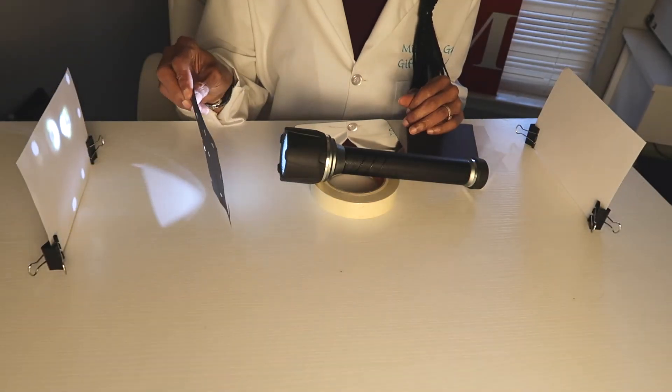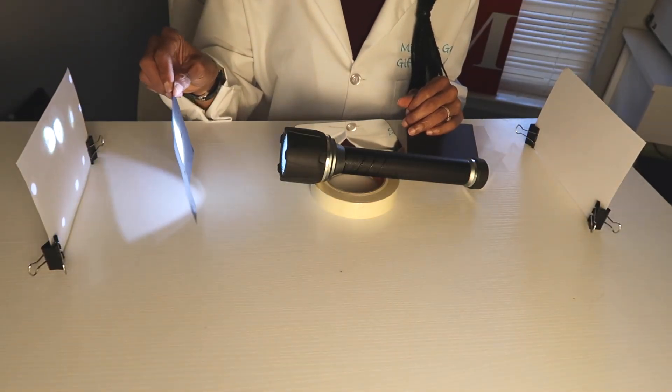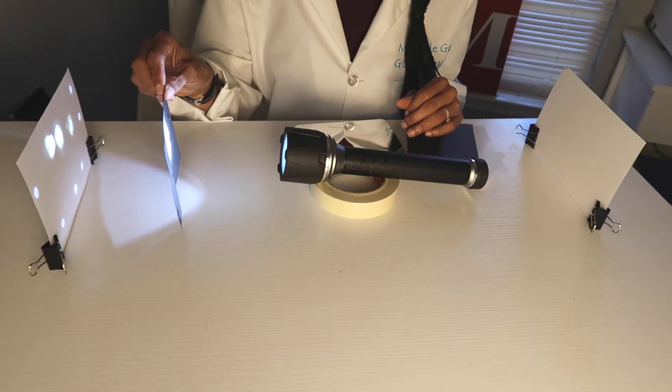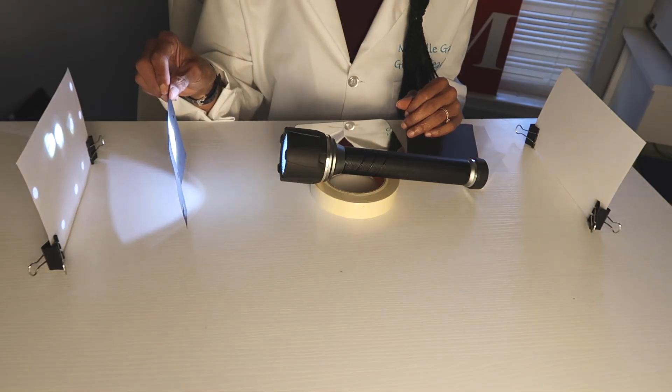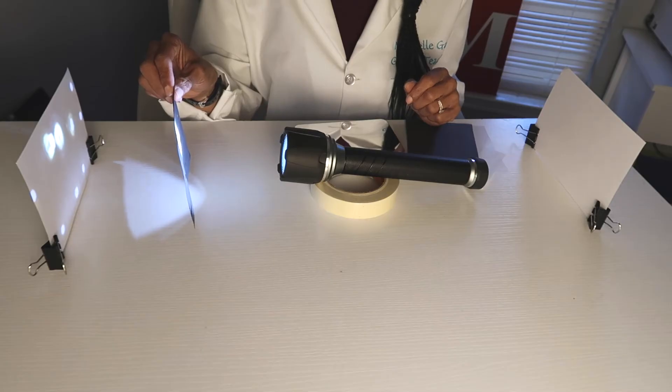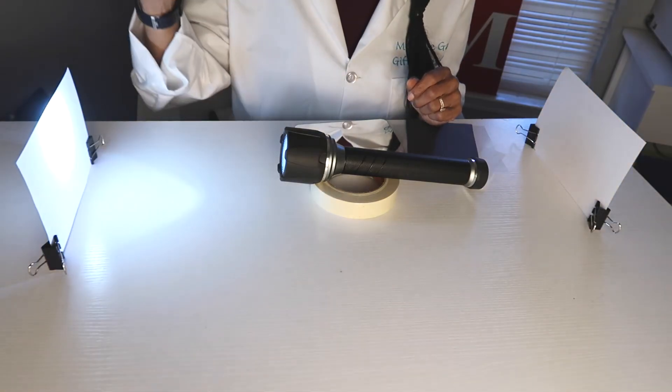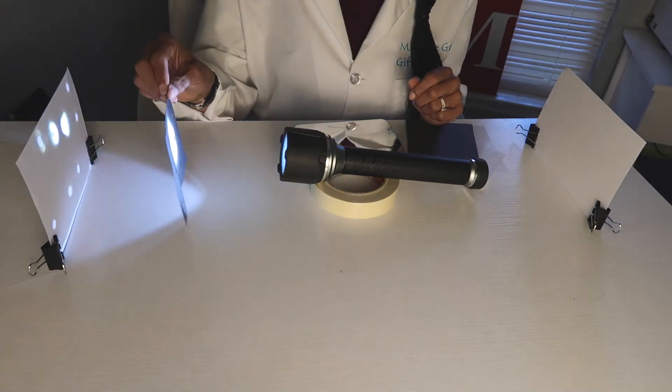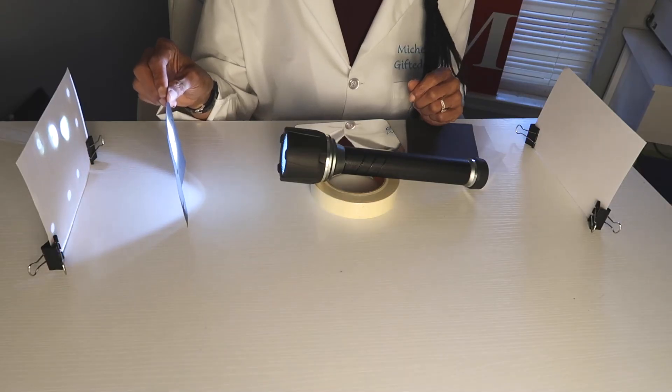Let's look at this sheet of black construction paper. Observe that there are holes in this sheet. Let's see what will happen. Now we have part of the light being transmitted a little, not a lot. If we move this, and then part is being absorbed.